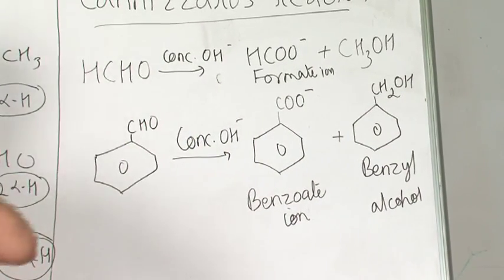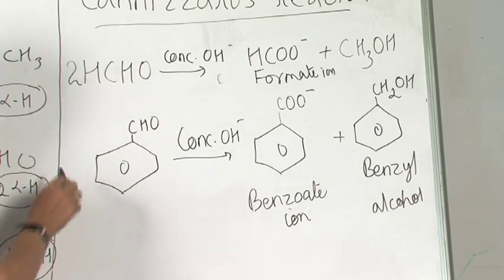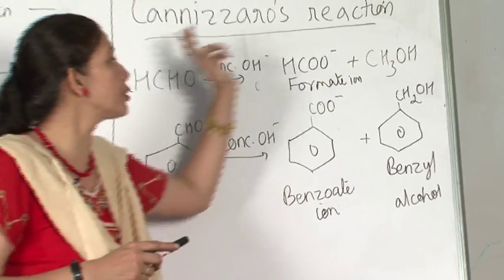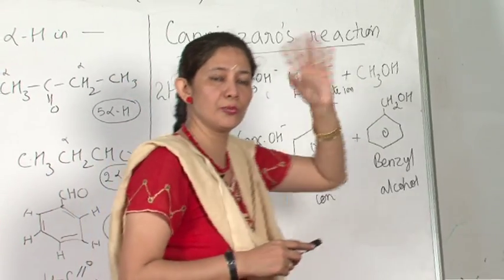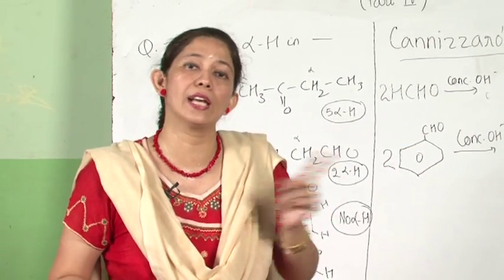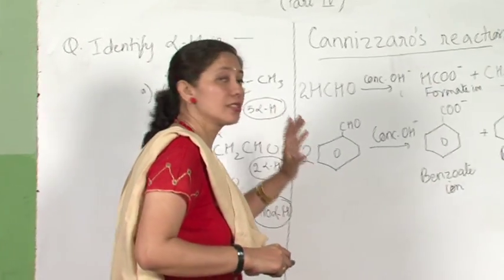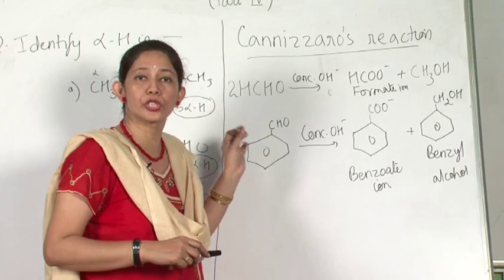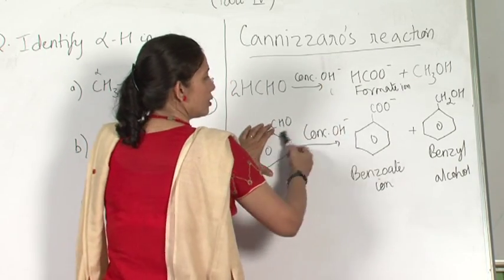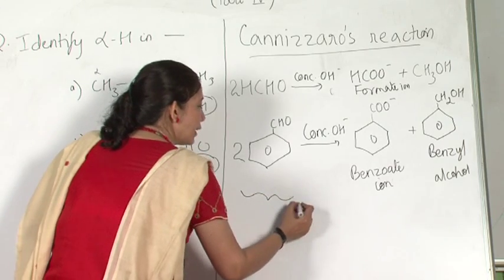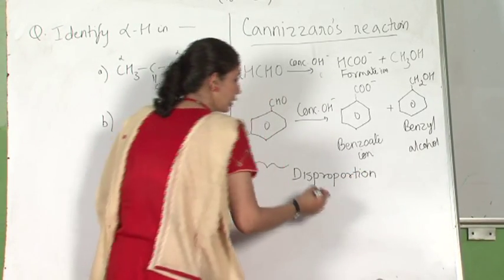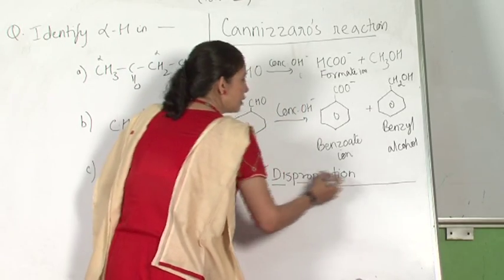What is happening is we take two molecules. One molecule undergoes oxidation to give rise to the salt of an acid, and another molecule undergoes reduction to give a primary alcohol. Remember from Class 11: when the same substance undergoes both oxidation and reduction simultaneously, such reactions are called disproportionation reactions. In Cannizzaro's reaction the same substance undergoes both oxidation and reduction, so this is an example of a disproportionation reaction.